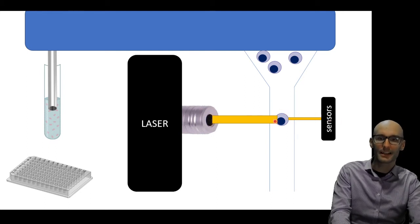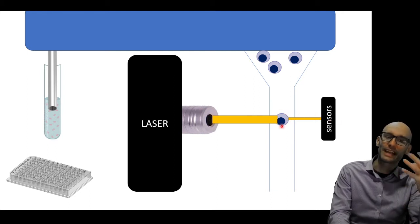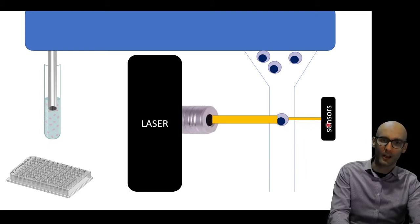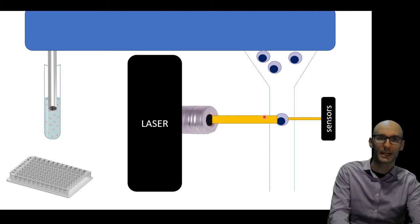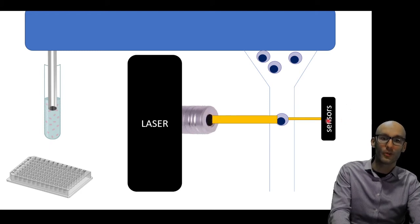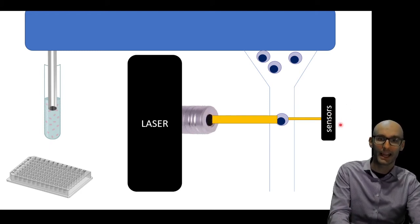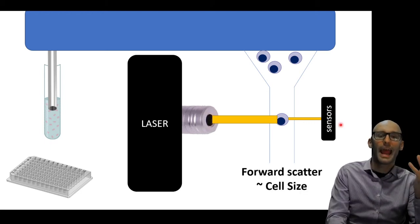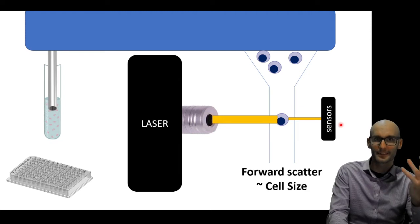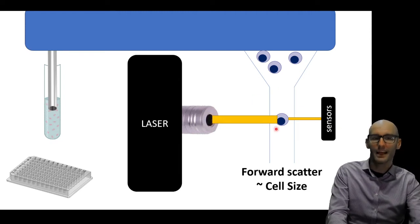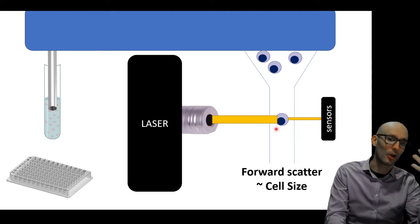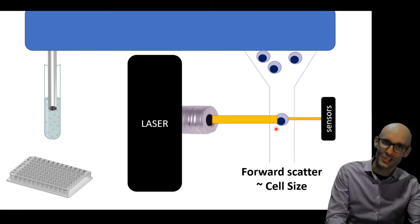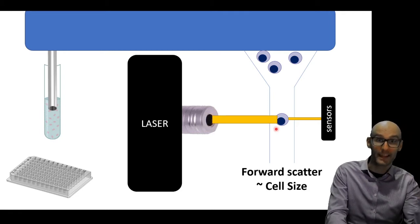That's because the cell is absorbing, but also scattering a lot of the light. And this drop in light that hits the sensor, so we know how much light is being emitted by the laser, and we know that not that much light is coming out the other side, is called forward scatter, and it corresponds to the cell size. The bigger the cell, the more light it's going to block out. It's almost like a shadow. The bigger the cell, the bigger the shadow. So the less light that comes out the other side.